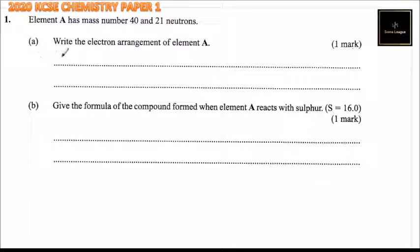We know that the number of electrons equals the number of protons, and the mass number is made up of protons and neutrons. So if you want to know the number of electrons, we can say 40 minus 21, and that is going to give you 19. Now those are the 19 electrons.